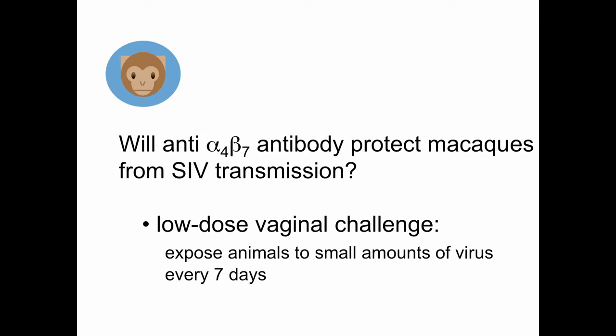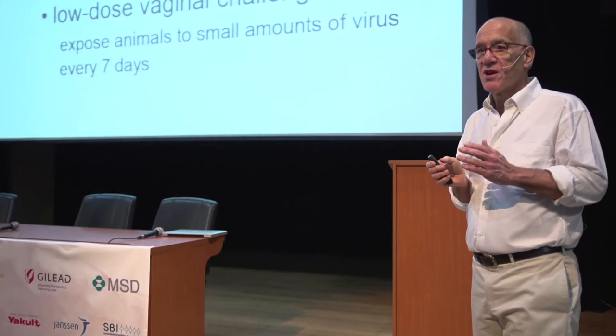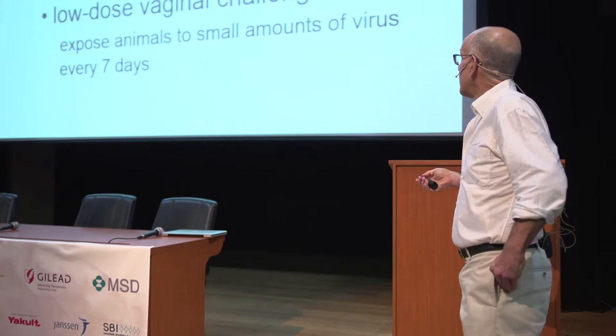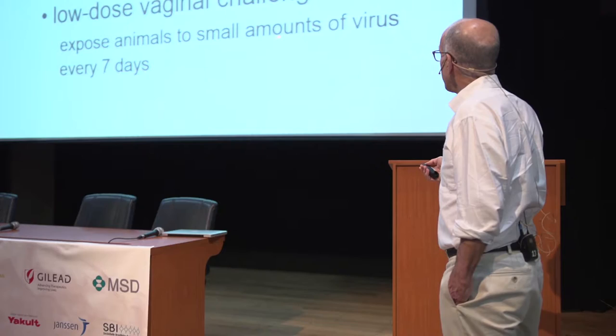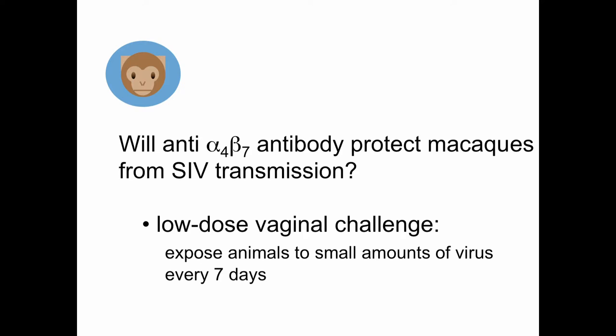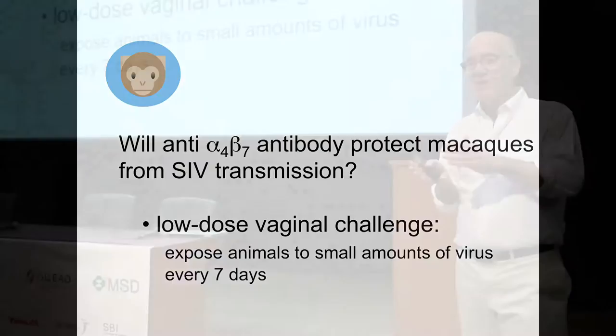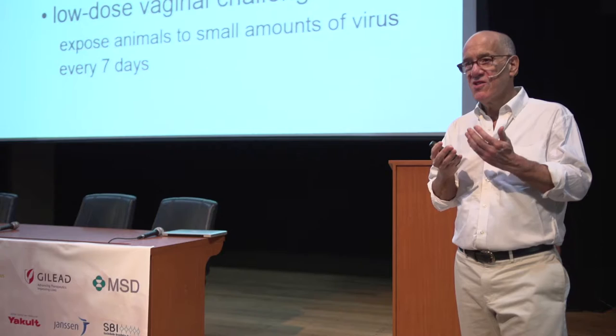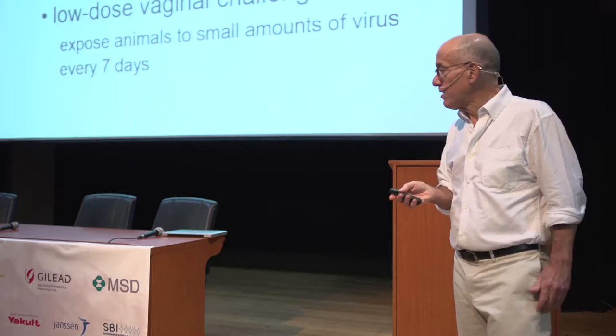The question we decided to ask was: will this anti-alpha 4 beta 7 antibody protect macaques from transmission? The type of transmission we were looking at was what we call low-dose vaginal challenge — in some crude way recapitulating the type of transmission a human would encounter. We expose animals to very small amounts of virus but repeatedly — once a week — to a low enough amount of virus that they wouldn't immediately become infected, but eventually should become infected. We wanted to recreate the inefficiency of sexual transmission built into our transmission model.